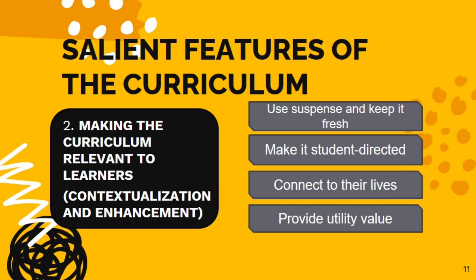Provide utility value. Utility value provides relevance first by picking students and by telling them the content is important to their future goals. It then continues by showing or explaining how the content fits into their plans for the future. This helps students realize the content is not just interesting but also worth knowing.